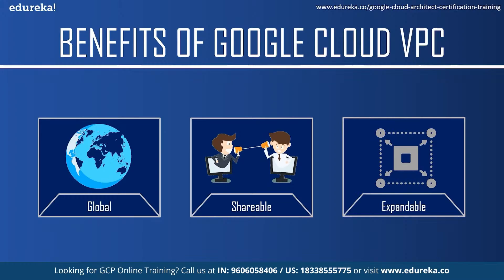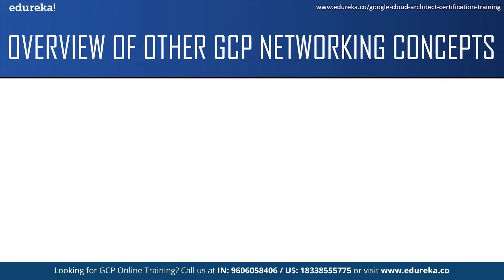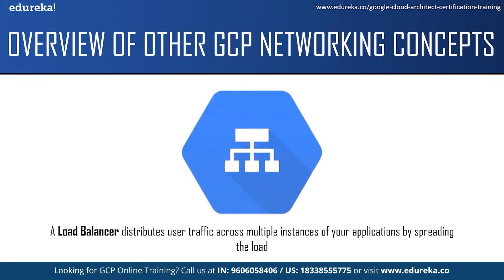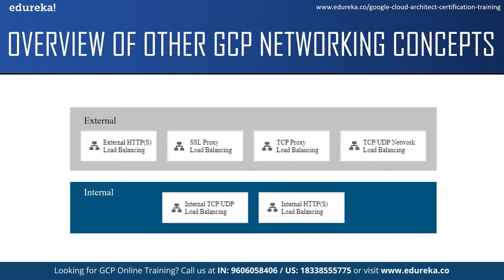Now let us move on to the next topic and see what is Google Cloud Load Balancer. A load balancer distributes user traffic across multiple instances of your application. By spreading the load, load balancing reduces the risk that your application experiences performance issues. Google Cloud offers six types of load balancer: external HTTPS load balancing, SSL and TCP proxy load balancing, external TCP/UDP network load balancing, internal HTTPS load balancing, and internal TCP/UDP network load balancing.